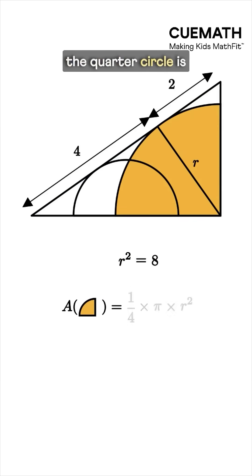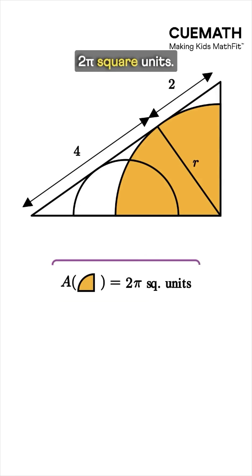Now the area of the quarter circle is pi r squared over 4. Substituting r squared and solving gives the shaded area as 2 pi square units.